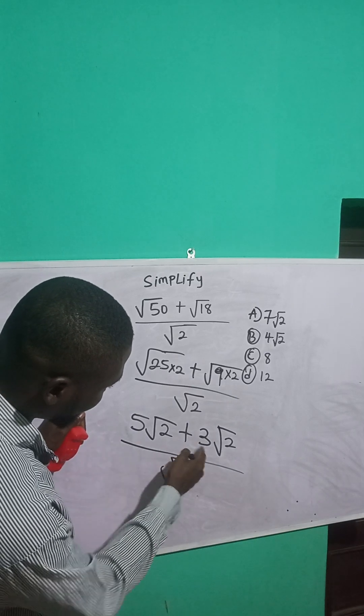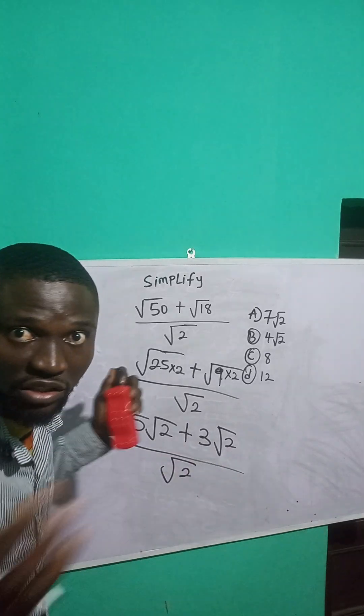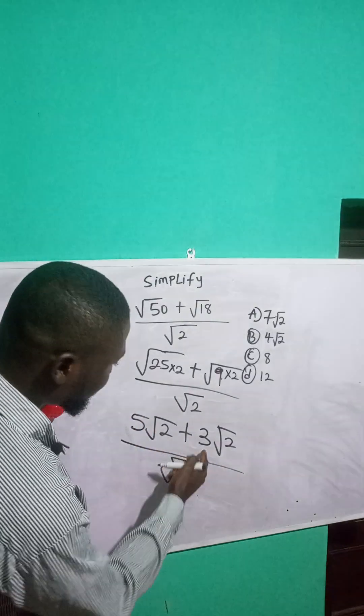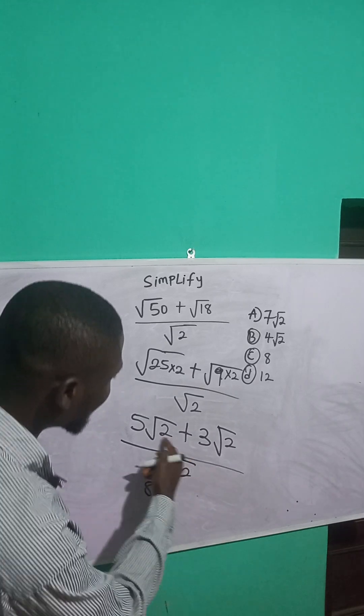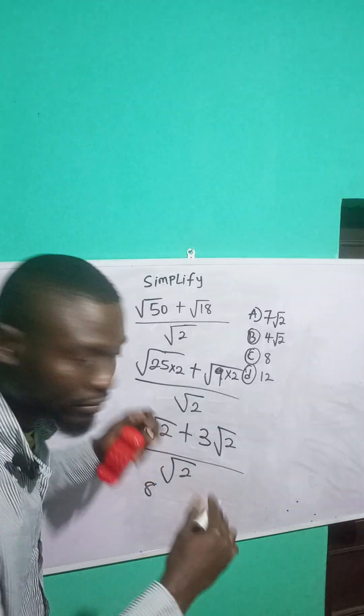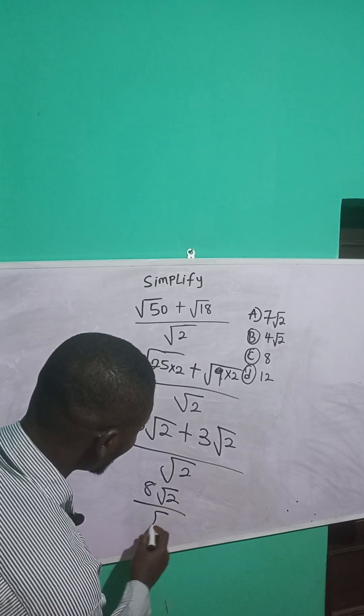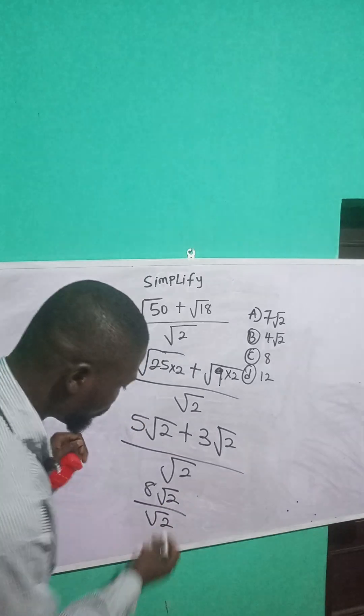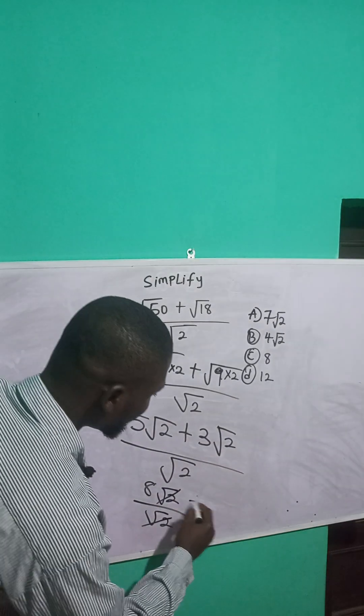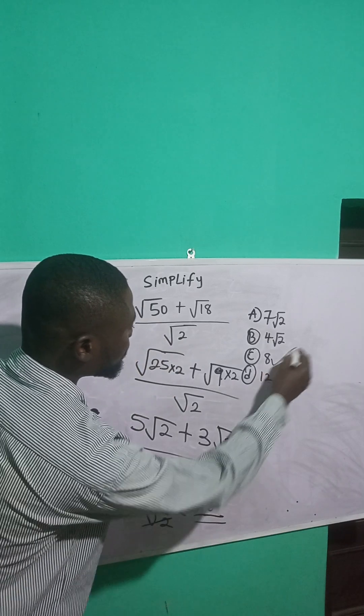5 plus 3 is 8. Root 2 is common, so I bring down √2. That's 8√2 over √2. Root 2 cancels out, so our answer is 8.